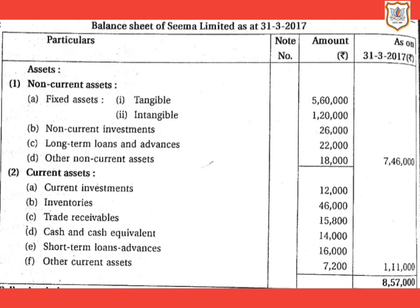Inventories means stock held for the purpose of trade in the normal course of business, that is for manufacturing or trading of goods. Inventories are classified as current assets because they are held with the purpose to convert them into cash and cash equivalents within a short period. It includes raw materials, work in progress, finished goods, stock in trade, stores and spares, and loose tools.